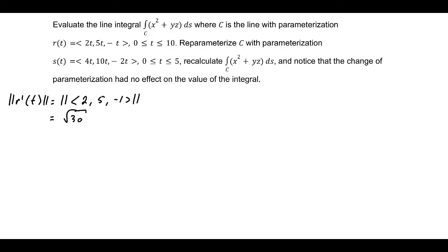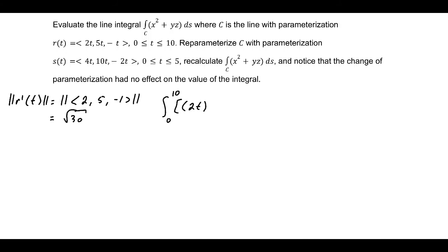So we'll include a factor of that in our integral. For the parameterization r of t, this is going to be the integral from 0 to 10 of open bracket, open parentheses 2t close parentheses squared, plus open parentheses 5t close parentheses times open parentheses negative t close parentheses, close bracket, times square root of 30, dt.